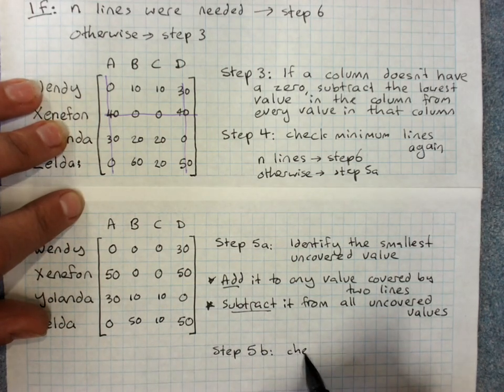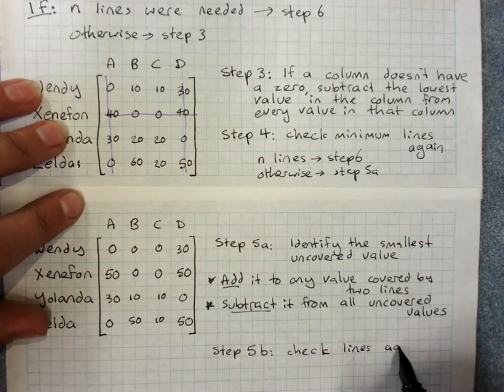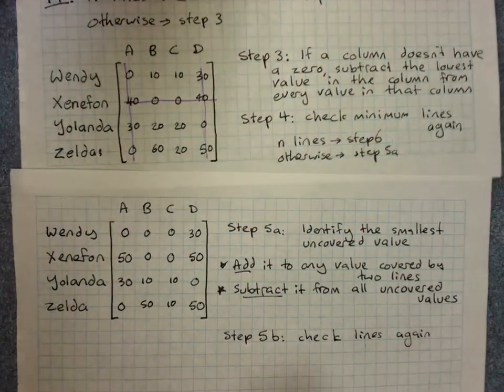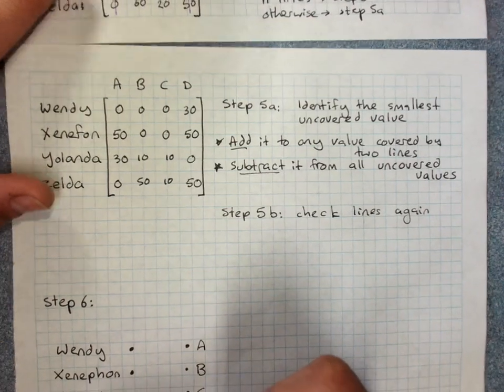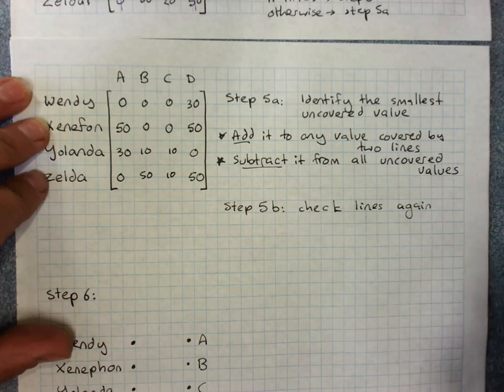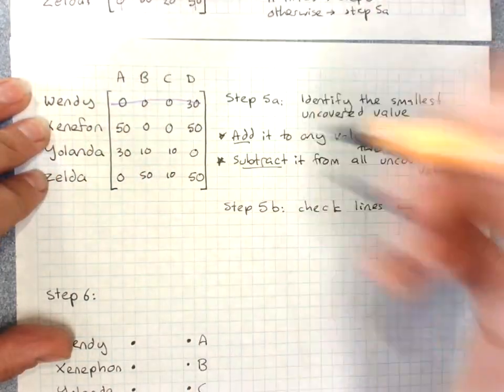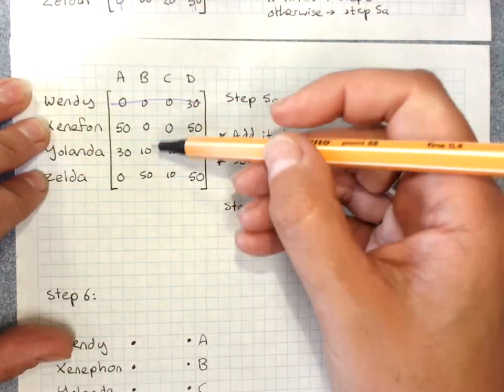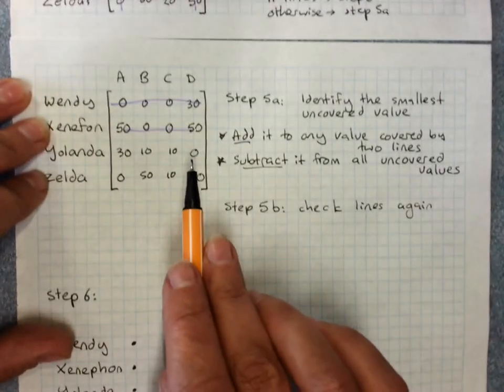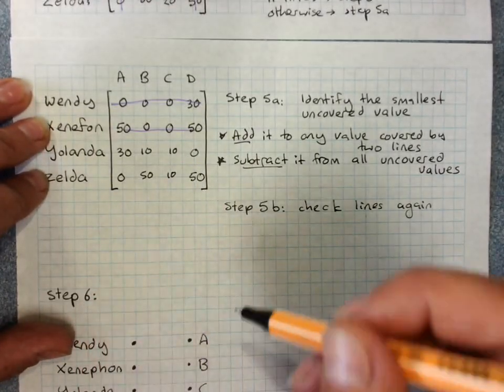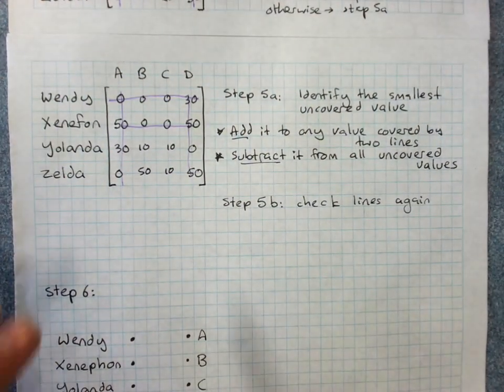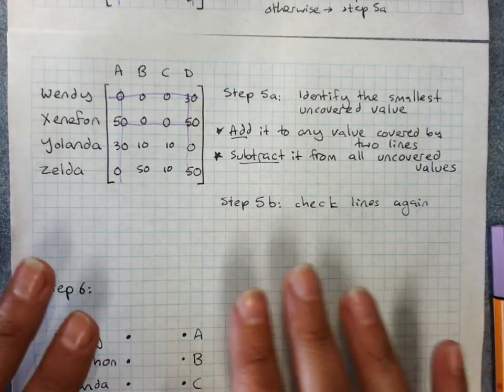All right. Step five b. Check the lines again. You'll notice after every change, we're checking the lines. So that is one way you can make this a little bit easier. So remember, lines go through the rows and columns with the most zeros first. That one. Now, this one, if we go through, we cover up two zeros. Yep. And then, I need two more lines to cover those. Bingo. I've got N equals four. Number of lines. Four lines. We're good. We move on to step six.